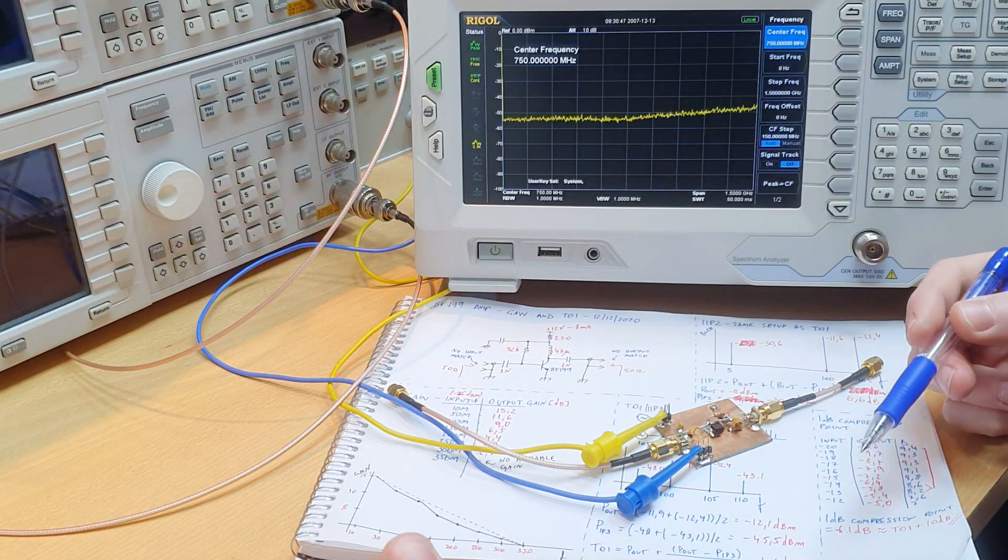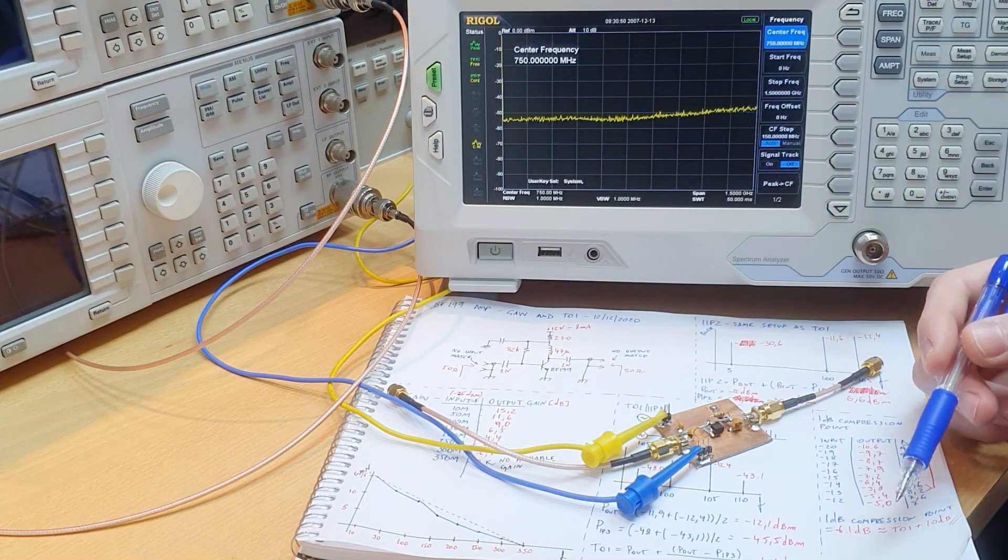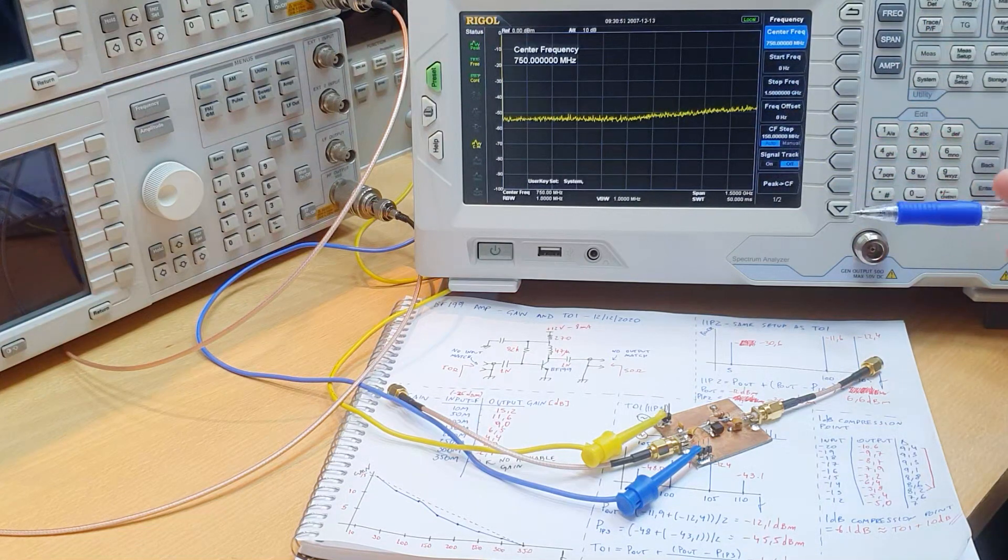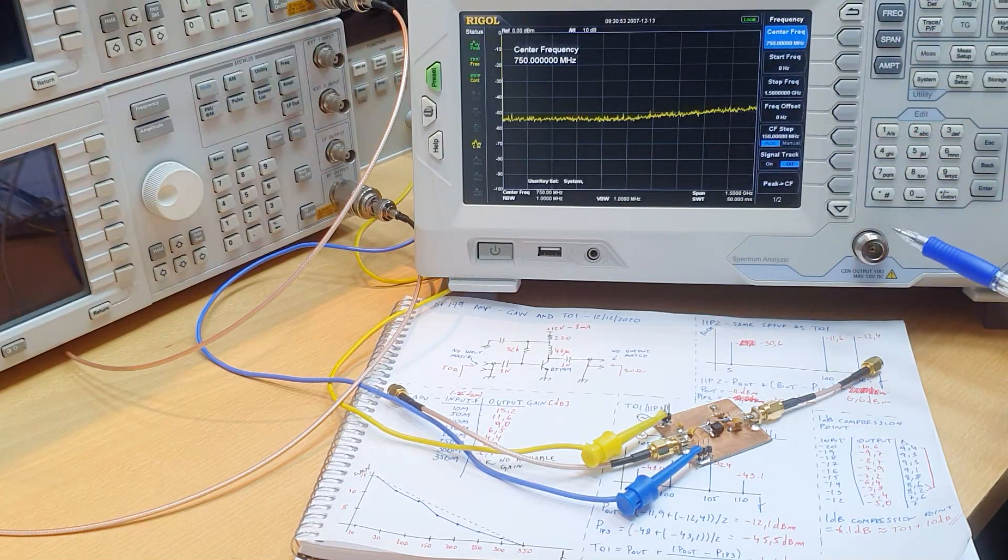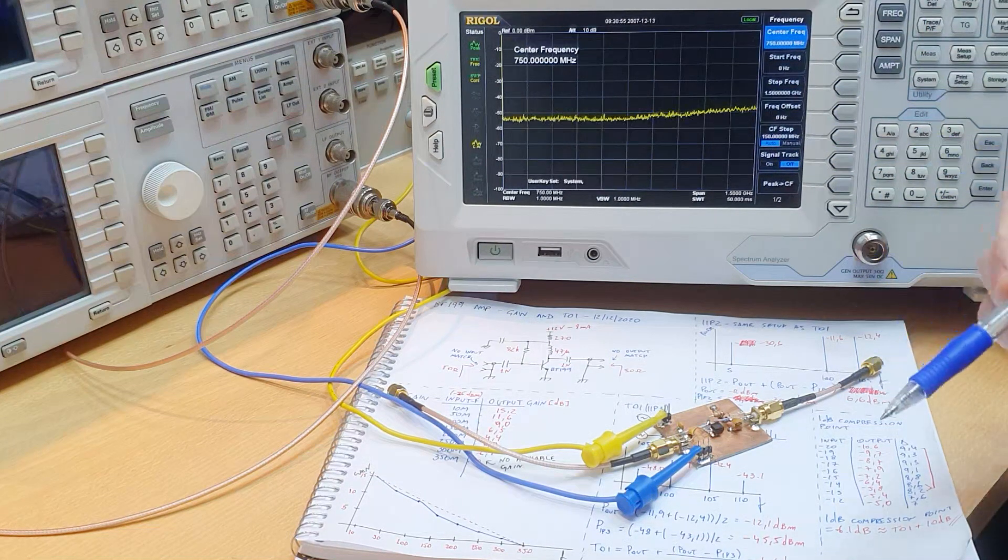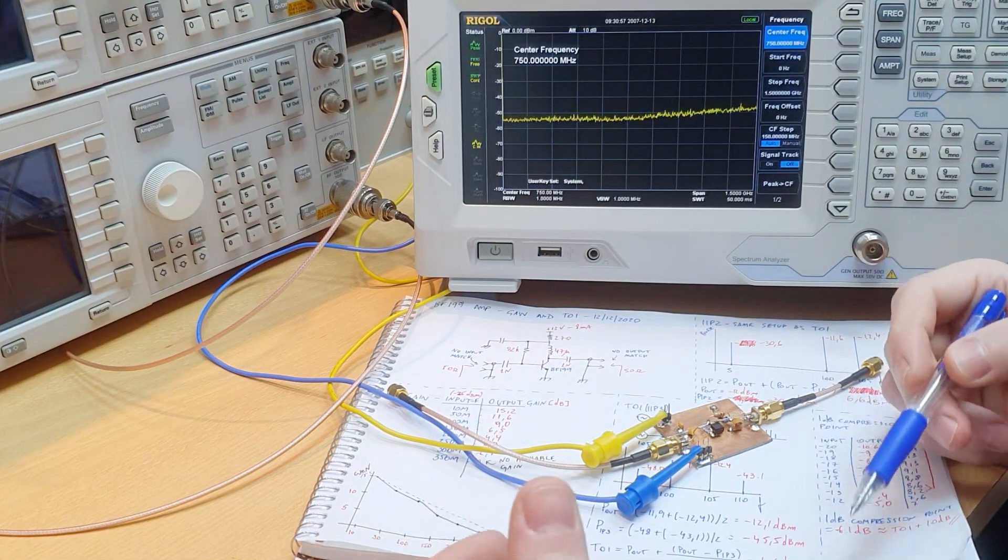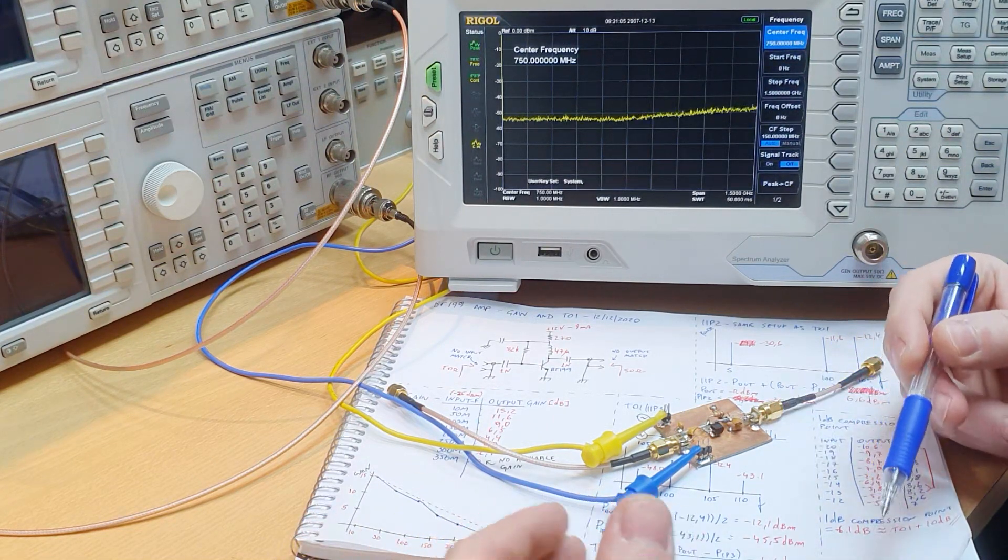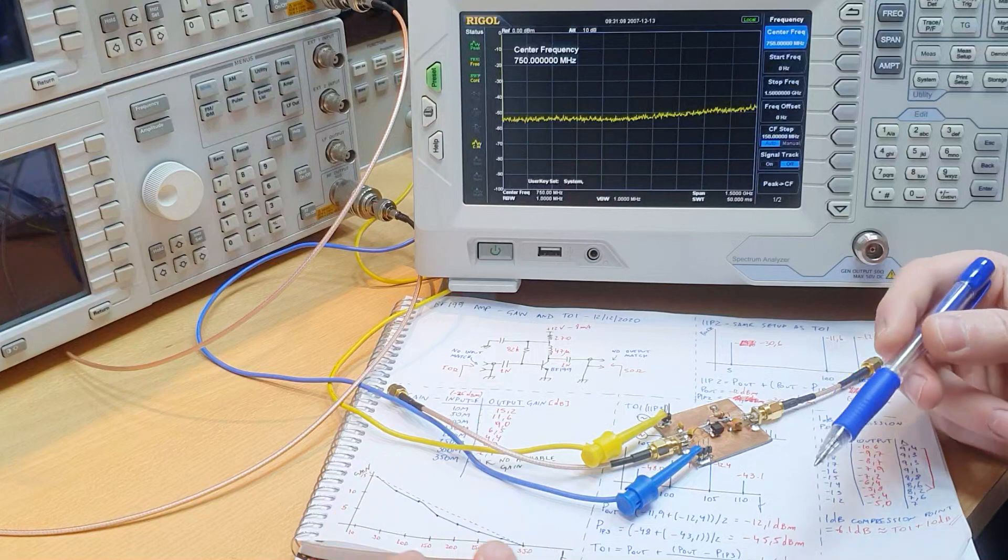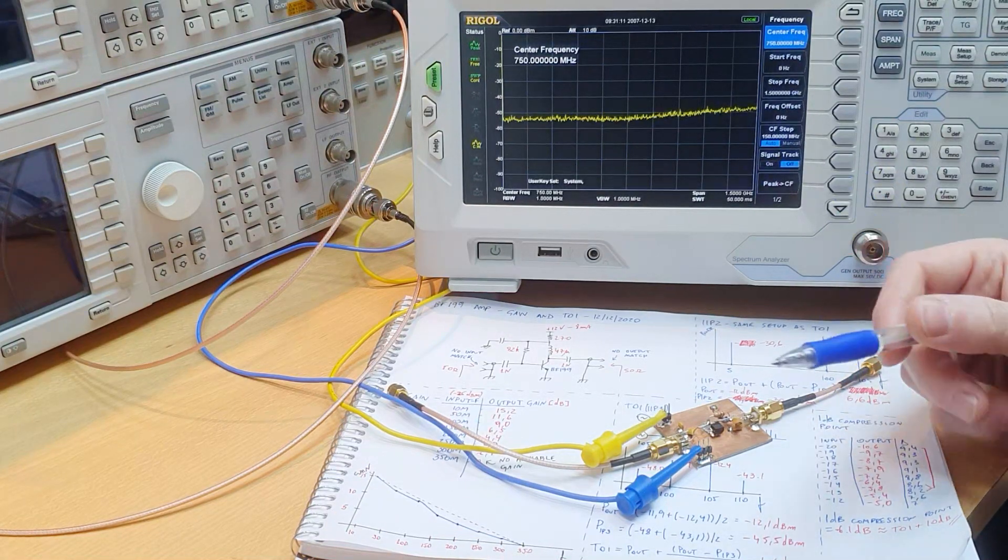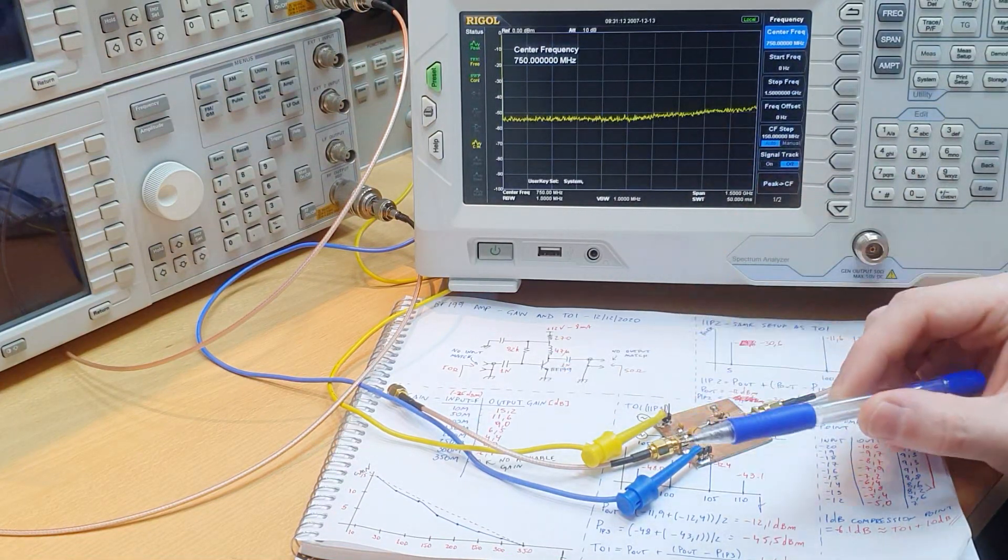We can measure it with a VNA, a vector network analyzer, or a spectrum analyzer with tracking generator. And today we're gonna measure it using a signal generator. We're gonna manually sweep the signal generator to see the gain of the amplifier over different points in frequency.